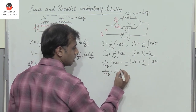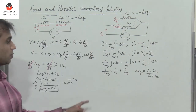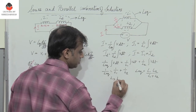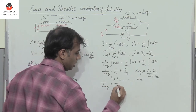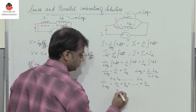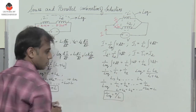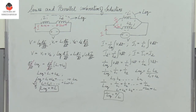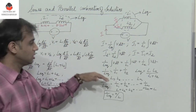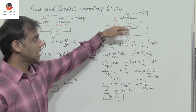Therefore, 1/L equivalent equals 1/L1 plus 1/L2. For two inductors, L equivalent equals L1 times L2 divided by (L1 plus L2). If all N inductors are equal to L, then 1/L equivalent equals N/L. So when inductors are connected in series, L equivalent is the sum; when connected in parallel, 1/L equivalent equals 1/L1 plus 1/L2 and so on.